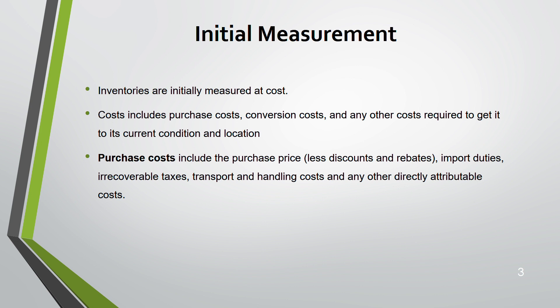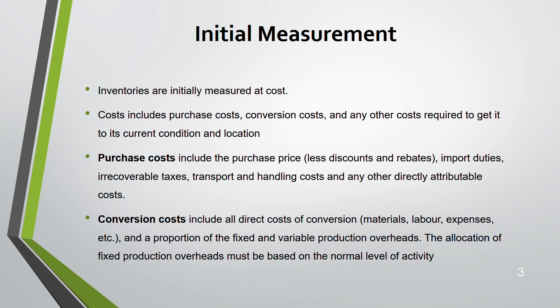Purchase cost includes your purchase price less discounts and rebates — sometimes you get discounts on bulk purchases. Import duties are also a cost of inventory when buying from outside the country. Irrecoverable taxes — tax which you cannot recover — will be added to the cost. Transport cost, handling cost, and any direct costs are all included in the purchase cost. Conversion cost includes material, labour, and expenses.